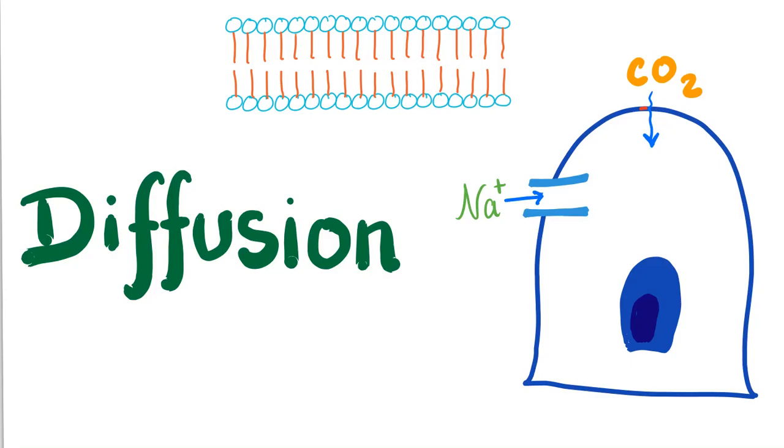Hey guys, it's Medicosis Perfectionalis and this is a series on physiology. Today let's talk about diffusion, a subtype of cell membrane transport. Let's get started.